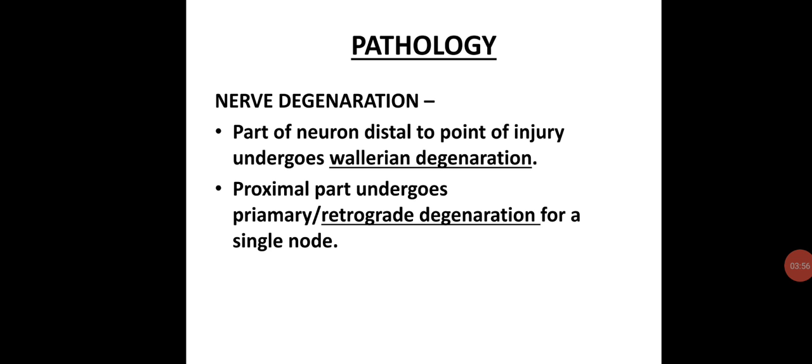Pathology — nerve degeneration. The part of the neuron distal to the point of injury undergoes Wallerian degeneration. When the nerve fiber is cut, the distal segment of the axon, severed from the cell body, degenerates — this is called Wallerian degeneration.